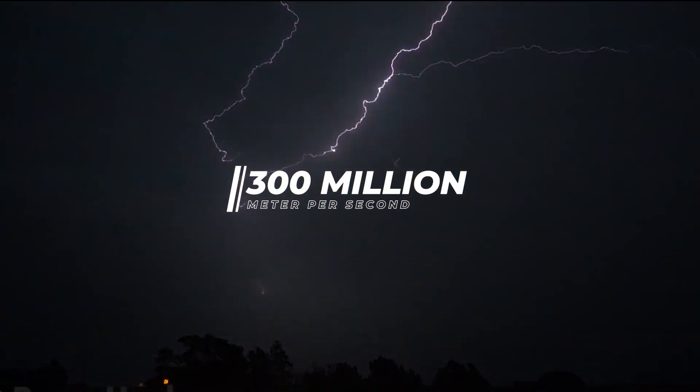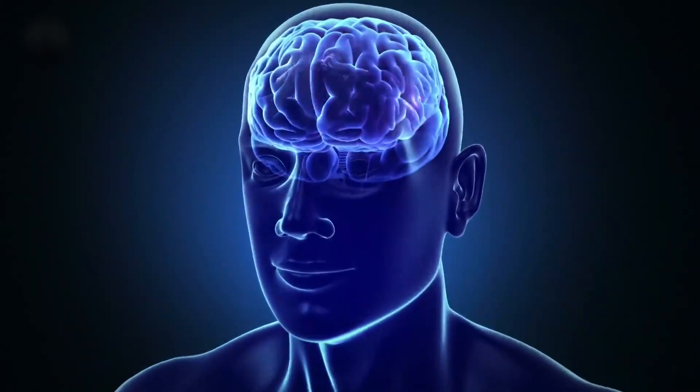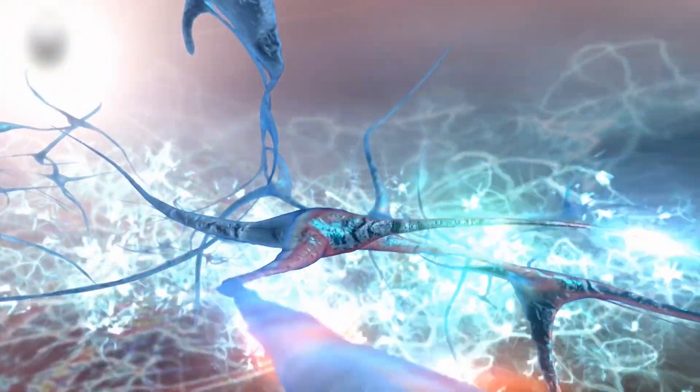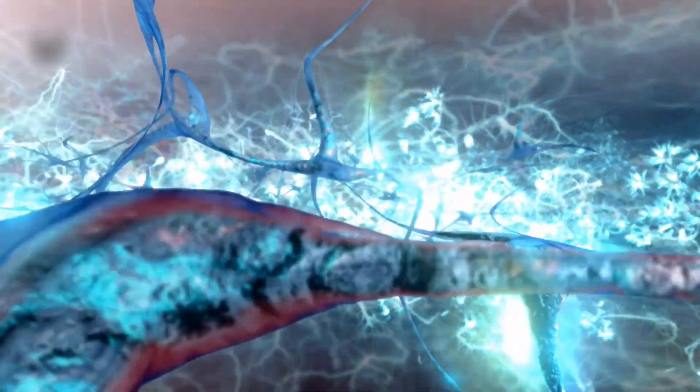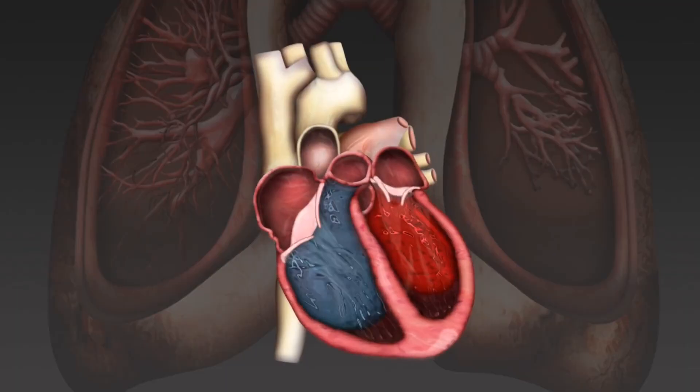Electricity travels at 300 million meters per second. Our brain's neurons are filled with electric charges that carry signals to our bodies. Electricity plays an important role in the way our heart functions. Muscle cells in the heart are contracted by electricity that runs through our body.